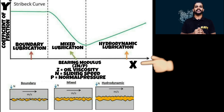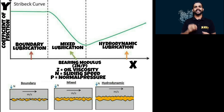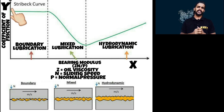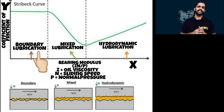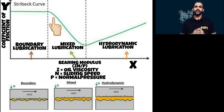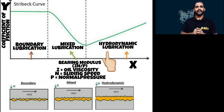From the graph, the x-axis represents bearing modulus, that is Z·N divided by P. I will be explaining the entire notation — Z, N, and P — as the video unfolds. The y-axis represents the coefficient of friction. You can see that the coefficient of friction starts very high, known as boundary lubrication, then keeps reducing to a point known as mixed lubrication, and further reduces to a point known as hydrodynamic lubrication.